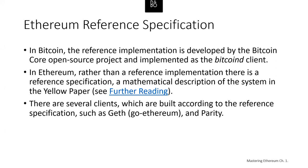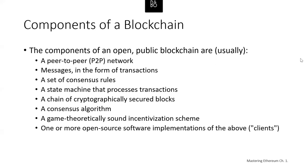The term blockchain could be used to represent all the components just listed as a reference to the combination of technologies that include the characteristics of a blockchain. However, there are a huge variety of blockchains, many of which have different properties and don't have all of these components. So it's helpful to have qualifiers to help understand the characteristics of a blockchain — such as open, public, global, or decentralized — because not every blockchain is open or public or global or decentralized.